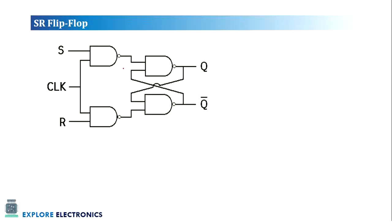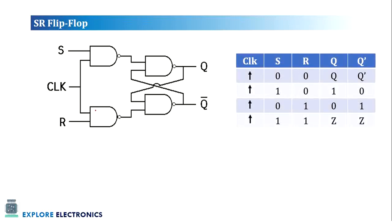In this circuit, SR flip-flop is designed using NAND gates. The four NAND gates are connected to produce Q and Q bar outputs by providing S, clock, and R to the gate inputs. Looking at the truth table, when the positive edge of the clock is given as input, the SR flip-flop responds and produces output. When the two inputs are 0 and 0, the output Q and Q bar will be in the previous state.